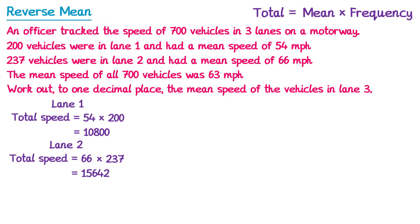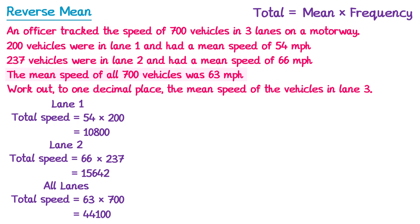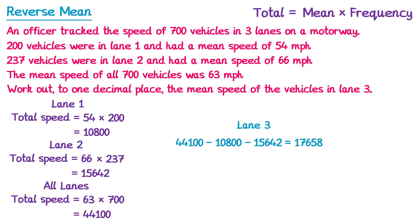We can't do this for lane 3 — that's what we're trying to work out. But we're told the mean speed of all 700 vehicles was 63 miles per hour. So the total speed for all vehicles is 63 multiplied by 700, which gives 44,100. To work out the total speed for lane 3, we do the total for all lanes, 44,100, and subtract the totals from lanes 1 and 2. This gives you 17,658.